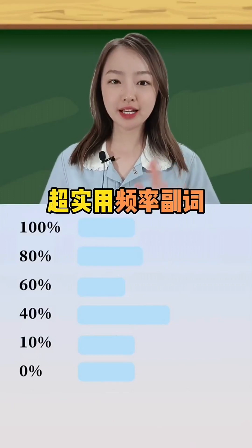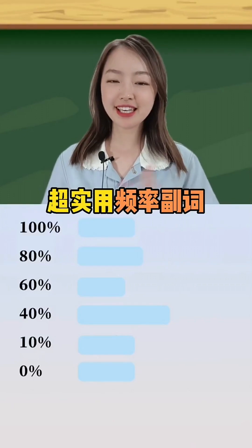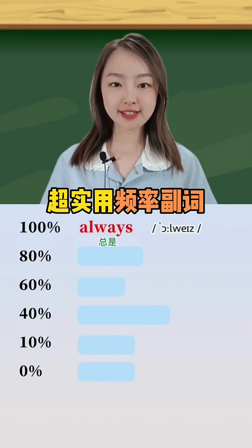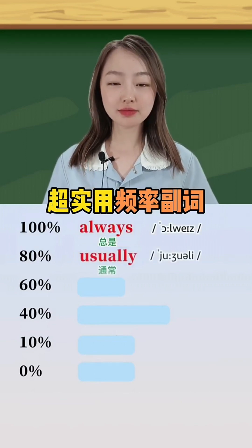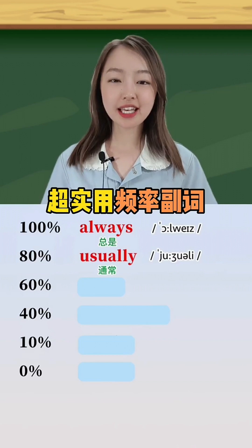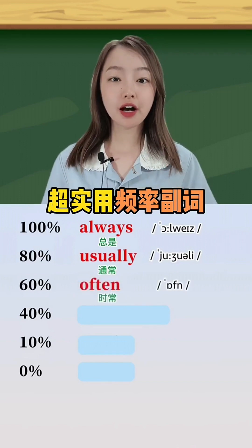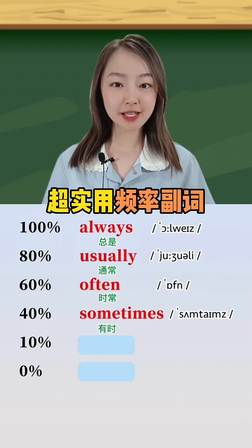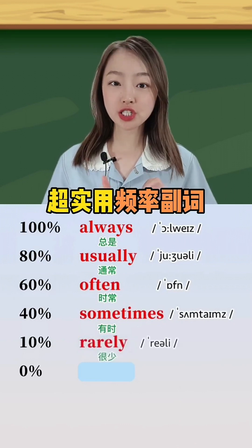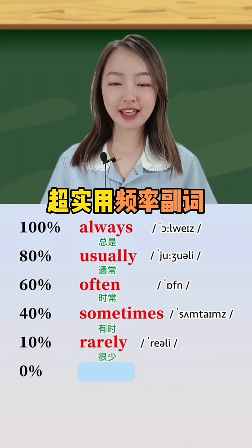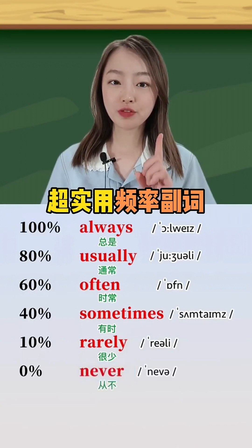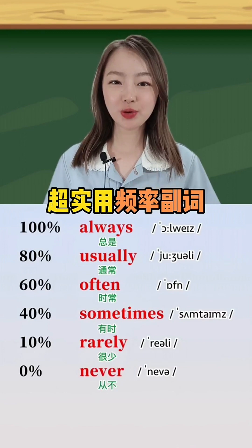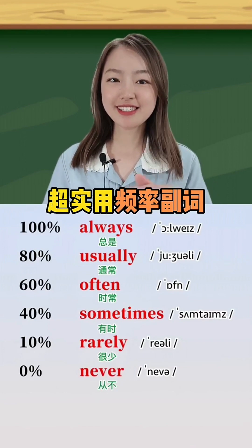超级实用的频率副词，简易收藏。100% always，80% usually，60% often，40% sometimes，10% rarely，最后只有0%就是没有可能性，never。你都学会了吗？学会了给老师一颗小星星吧。